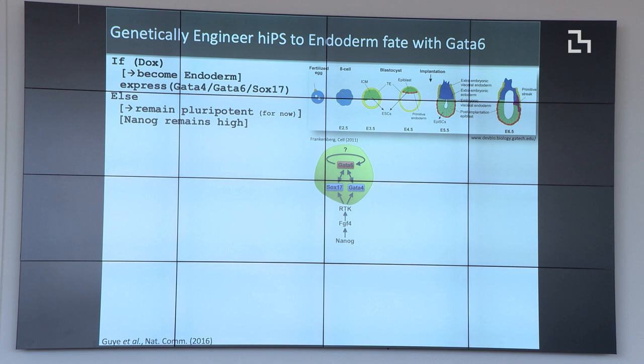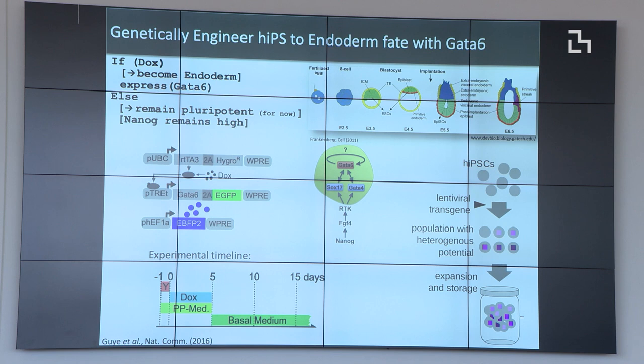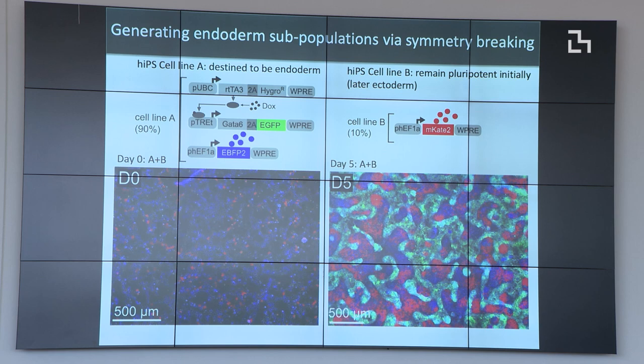We try to write this program as a self-timed, multi-step differentiation process where an input chemical starts the progression and we incorporate feedback. That's what we've been doing — this is work published a few years ago by Patrick Gee and Mo Ibrahim. These endoderm cells start expressing sulfate regulators and go through symmetry breaking using a simple circuit integrated into iPSCs. In the presence of a small molecule, Dox, which is FDA approved, you get the first symmetry breaking happen over days zero to five.